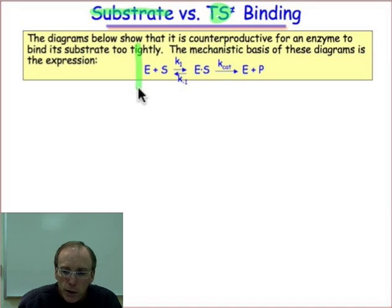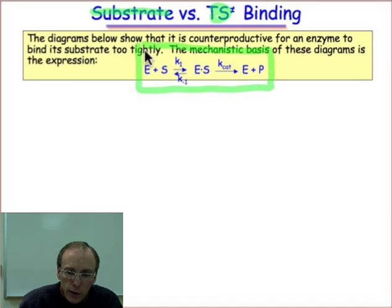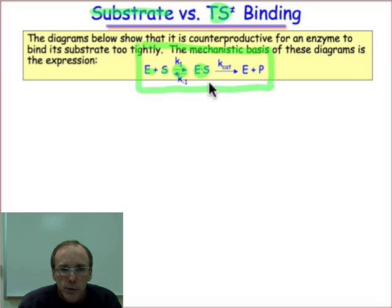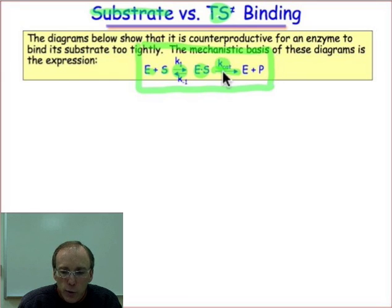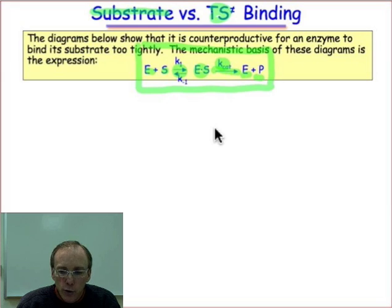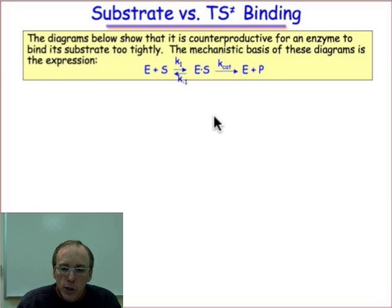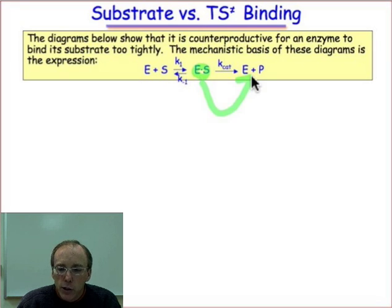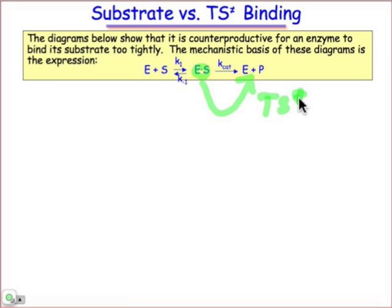We're going to answer that question by looking at this kinetic model, where we're going to assume the enzyme and substrate are in a fast equilibrium to form an enzyme-substrate complex. We'll treat the enzyme-substrate complex as a unimolecular species that breaks down by a first-order rate coefficient kcat, yielding the enzyme and the product — that's the turnover event. The question is: should the enzyme bind the substrate more tightly, or should it bind the transition state that leads to the turnover process?